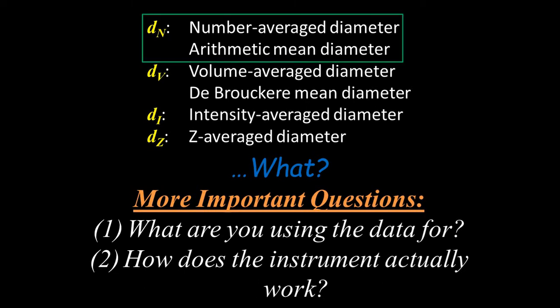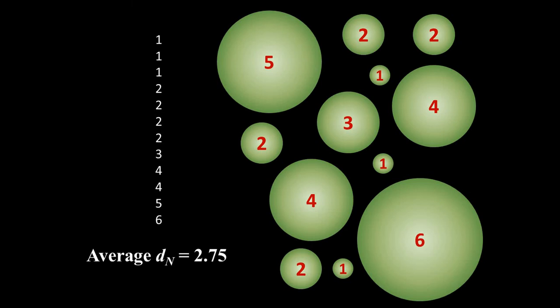The number that you probably imagine when I say average diameter is called the number average diameter or number weighted mean diameter or arithmetic mean dn. Imagine being given a photo of a bunch of spheres of different sizes and being asked to calculate their average diameter. Most likely, you'd just measure the diameter of each sphere, tally up all the numbers, and take the average.